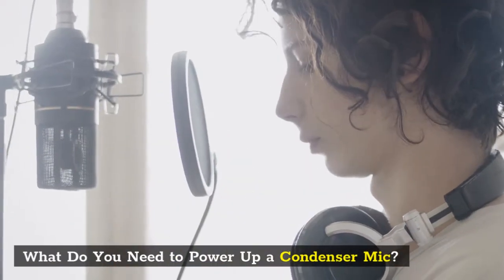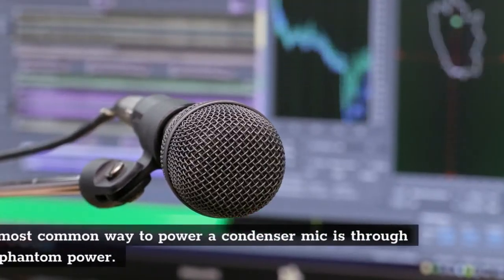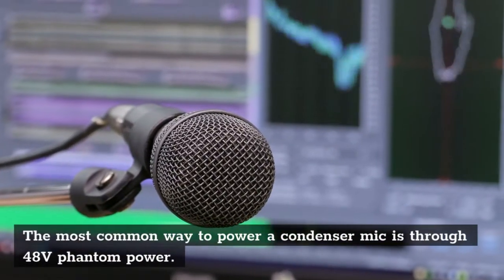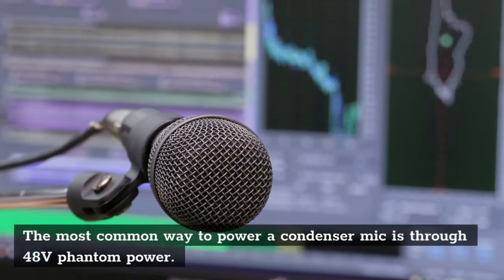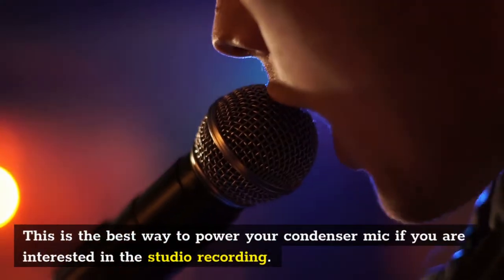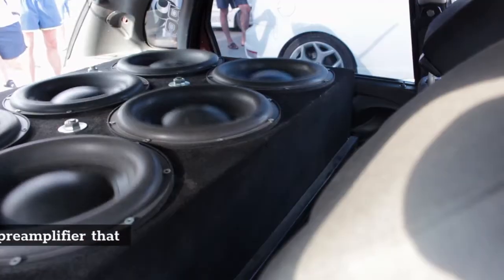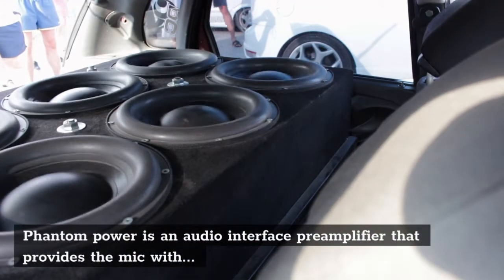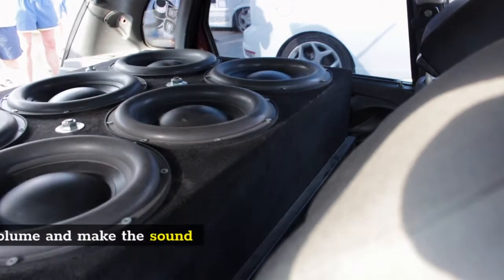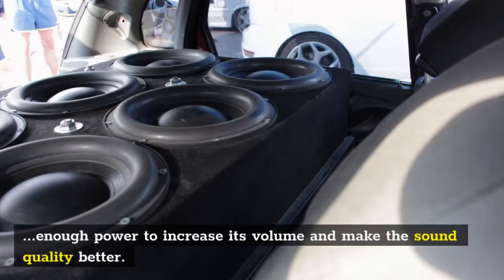What do you need to power up a condenser mic? The most common way to power a condenser mic is through 48 volts phantom power. This is the best way to power your condenser mic if you are interested in studio recording. Phantom power is an audio interface preamplifier that provides the mic with enough power to increase its volume and make the sound quality better.